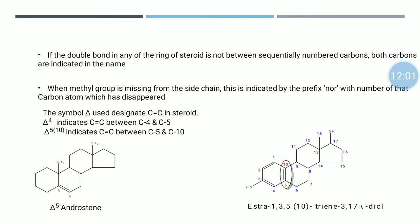Now let us see the criteria for representing double bonds in a steroid molecule. If the double bond in any ring is not between sequentially numbered carbon atoms, then both carbon numbers are indicated in the name. When a methyl group is missing from the side chain, this is indicated by the prefix 'nor' with the number of that carbon atom which has disappeared — for example, norethisterone, where a methyl group is missing.